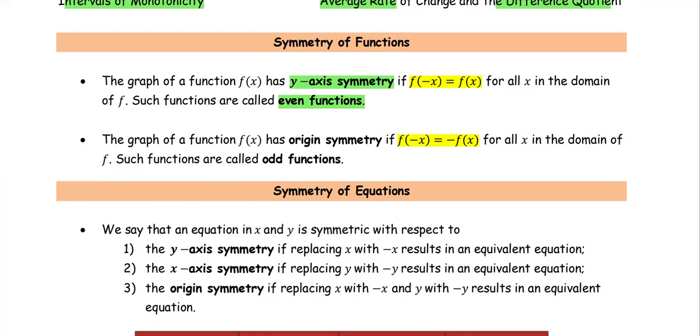The graph of the function f(x) has origin symmetry if f(-x) equals -f(x). In this case, we call the function an odd function.